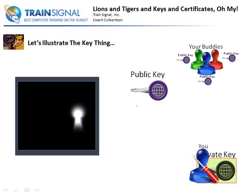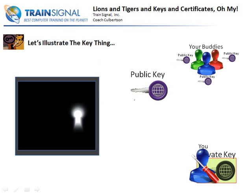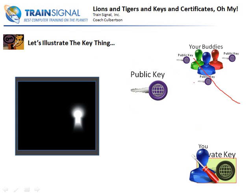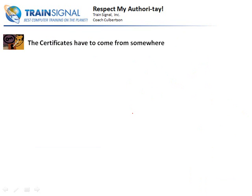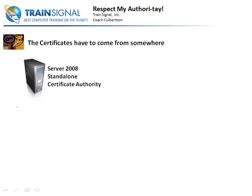The private key stays with you, or if it happens to be a server, it stays with the server. Public and private keys are generated together by a certificate authority. We take the public keys and put them into the certificate — we don't hand out individual bits of code to our buddies, we hand out certificates that contain our public key. Certificates contain keys so we can get to encrypted data, and that part of the certificate also proves our identity. Those certificates have to come from somewhere, so let's talk about where they come from.